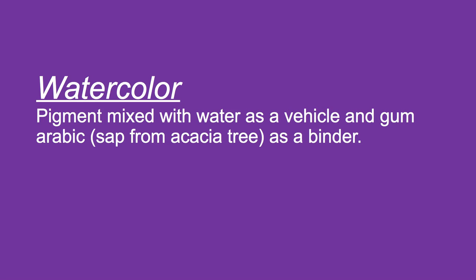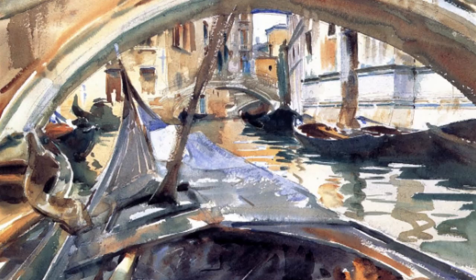The first type of painting is watercolor — pigment mixed with water as a vehicle and gum arabic, which is sap from an acacia tree, as a binder. Here is a painting by John Singer Sargent called 'Rio de Santa Maria Formosa, Venice,' a very famous watercolor by a very famous watercolor painter. Watercolor is basically a staining technique — paint is applied in thin, translucent washes that allow light to pass through the layers of color and reflect back from the white paper. White is not painted; you leave white spaces as white, and opaque colors are painted for emphasis.